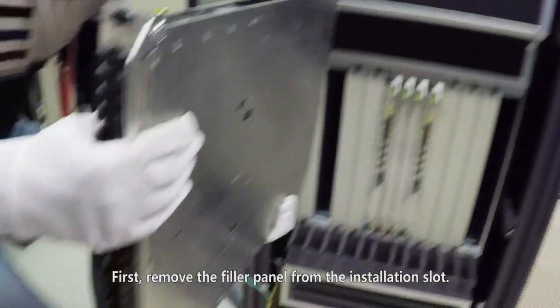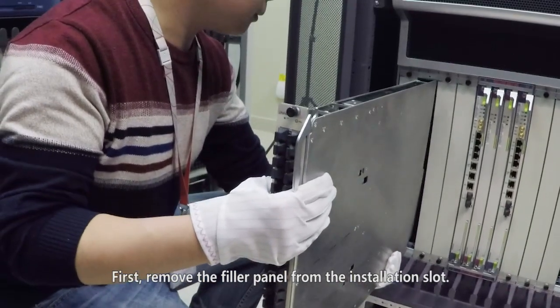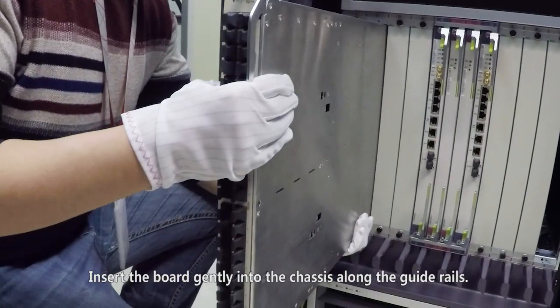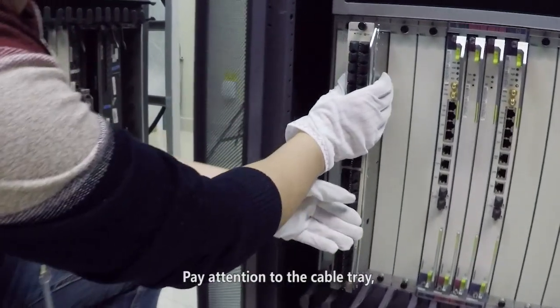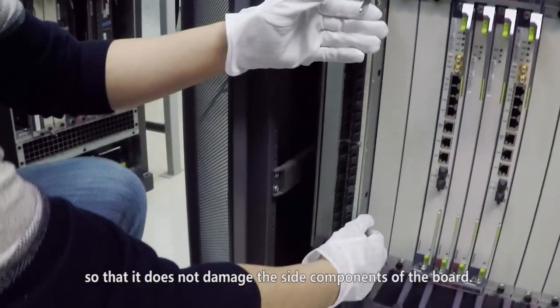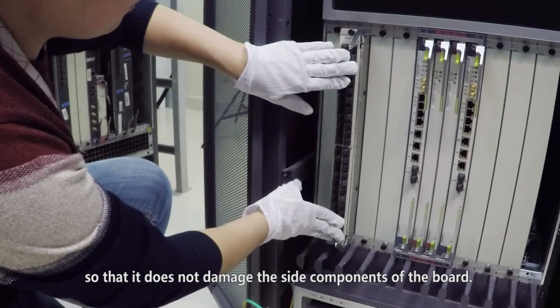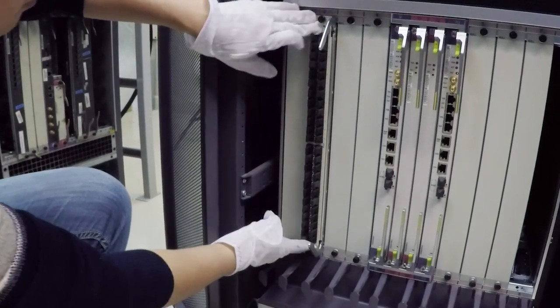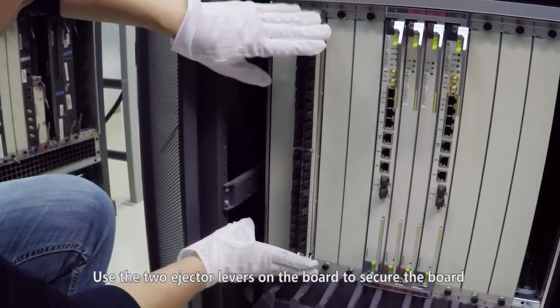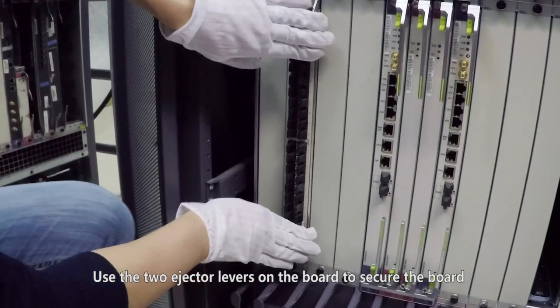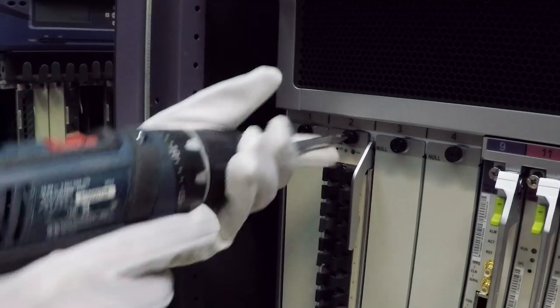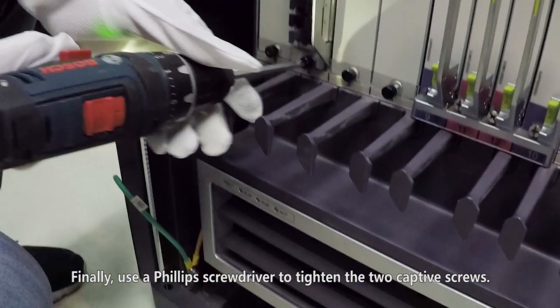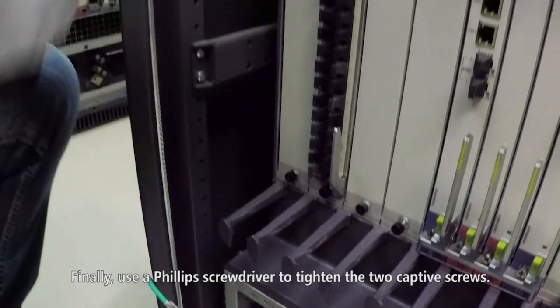First, remove the filler panel from the installation slot. Insert the board gently into the chassis along the guide rails. Pay attention to the cable tray so that it does not damage the side components of the board. Use the two ejector levers on the board to secure the board until the ejector levers are parallel with the board panel. Finally, use a Phillips screwdriver to tighten the two captive screws.